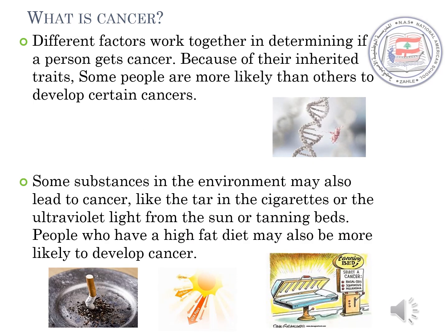Different factors work together in determining if a person gets cancer. Because of their inherited traits, some people are more likely than others to develop certain cancers. Some substances in the environment may also lead to cancer, like the tar in cigarettes or the ultraviolet light from the sun or tanning beds. People who have a high-fat diet may also be more likely to develop cancer.